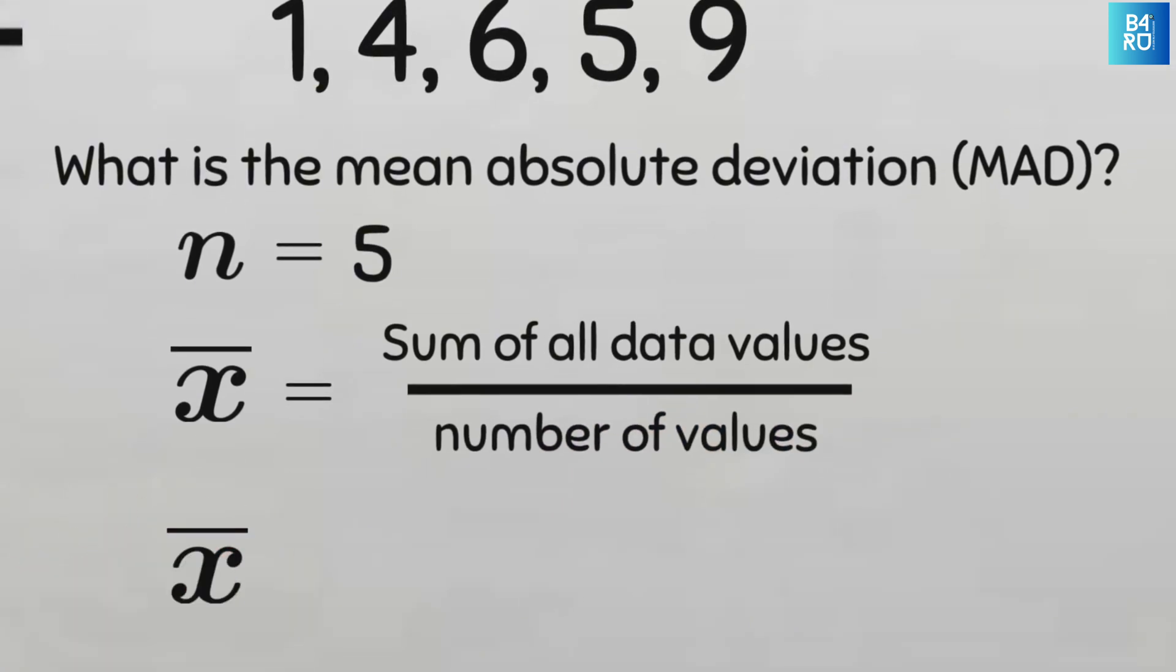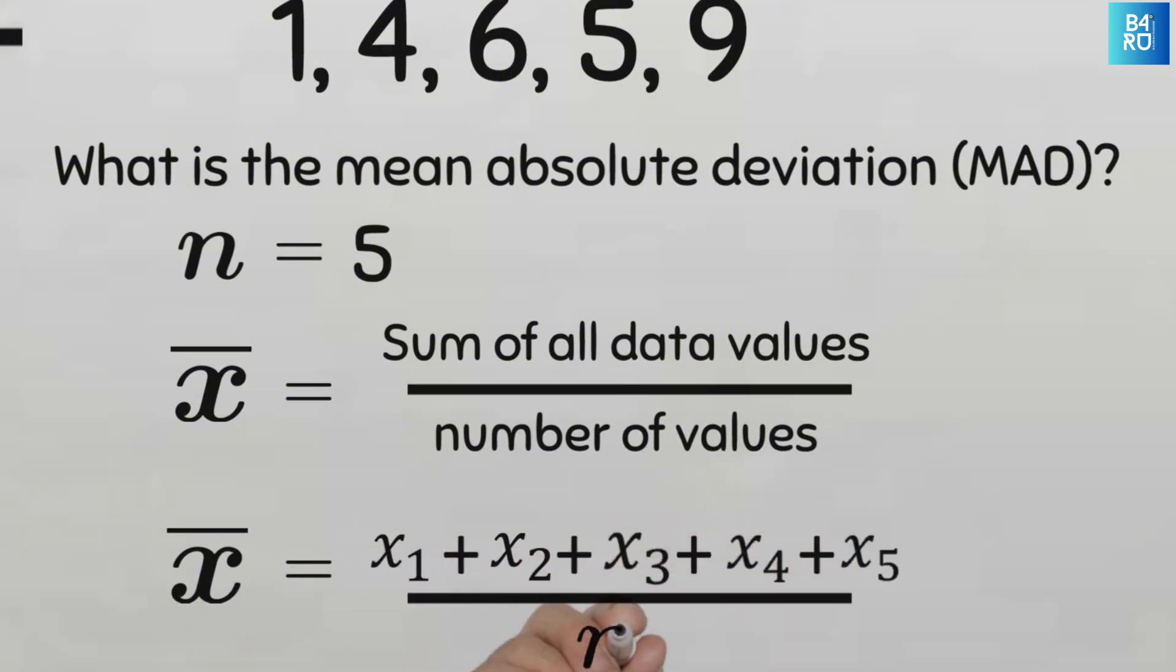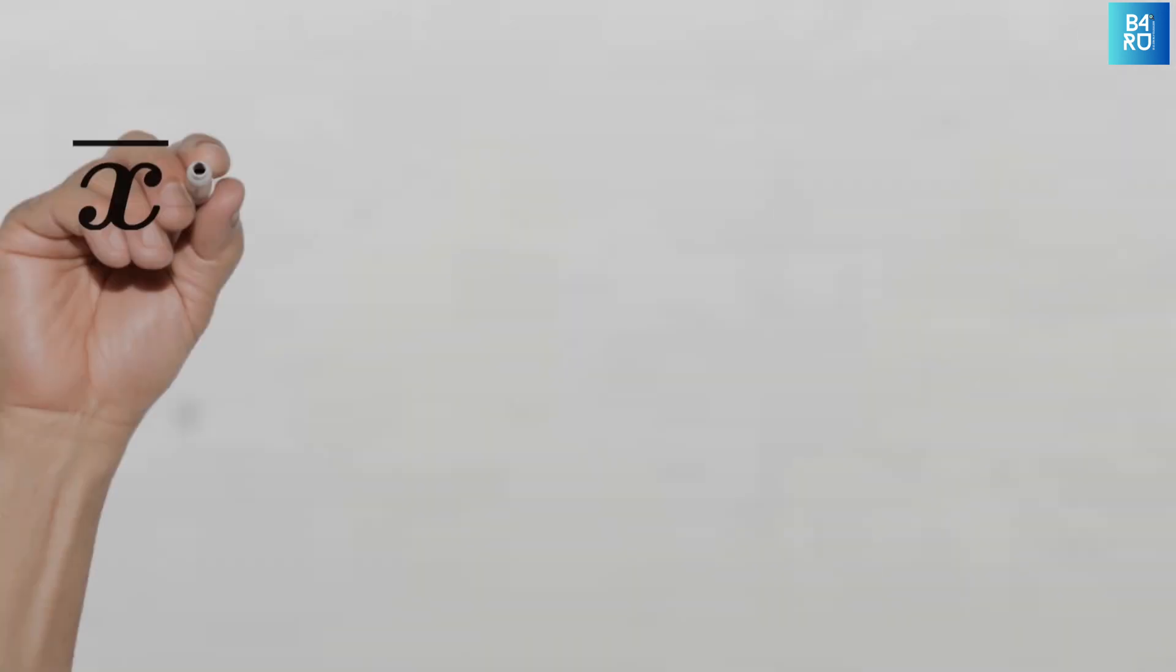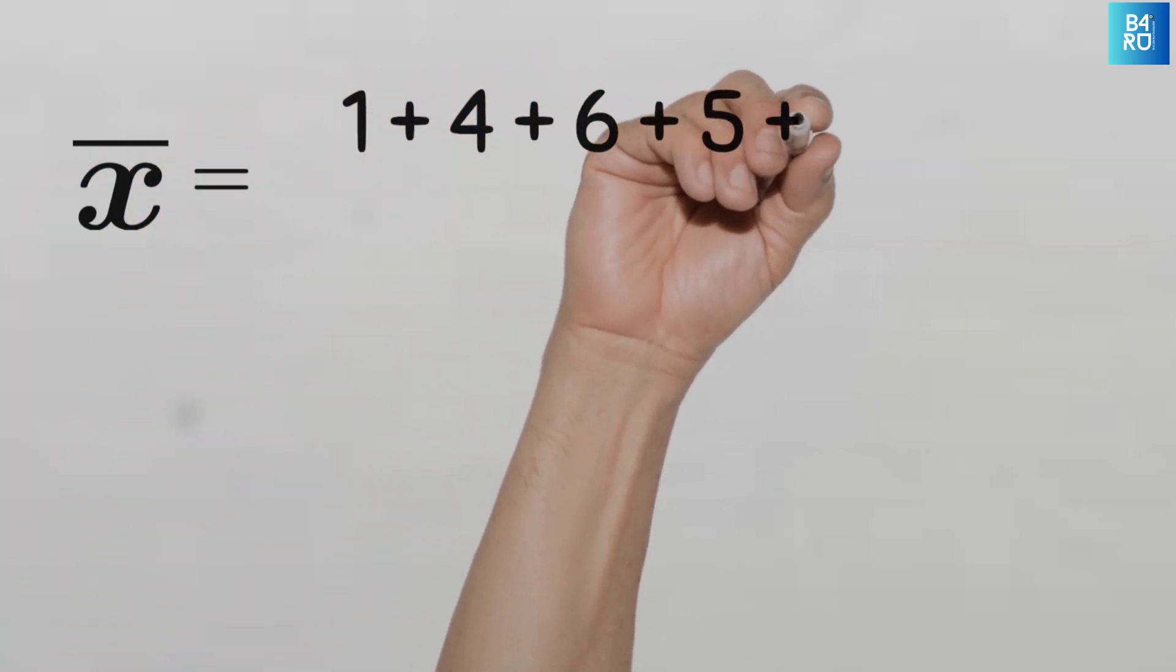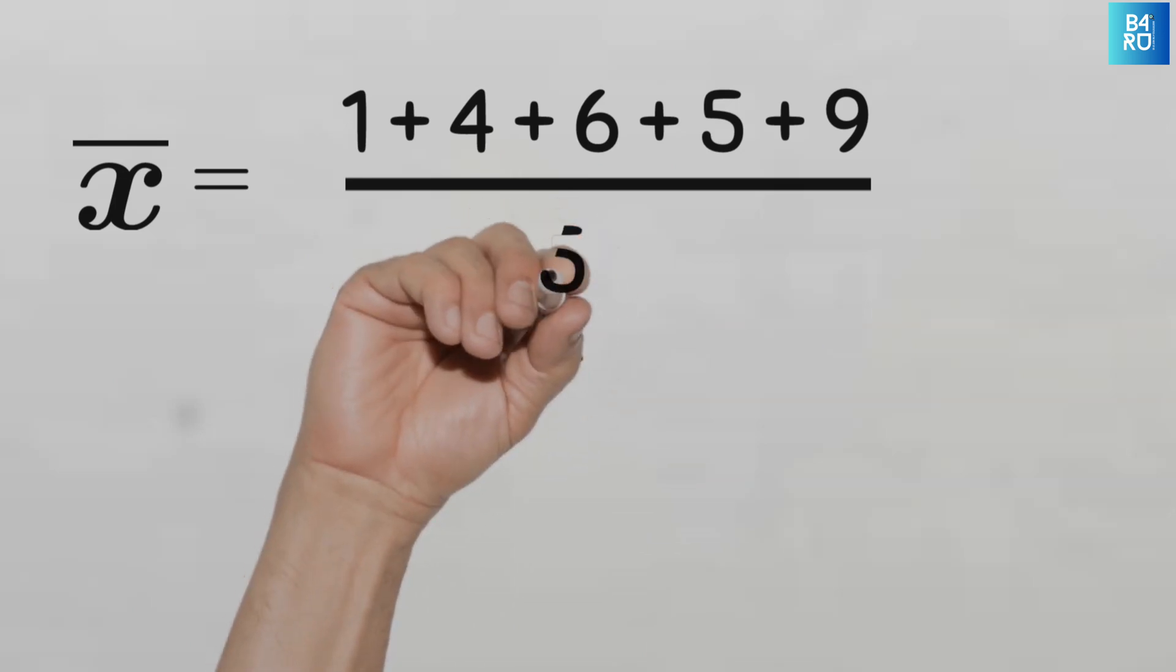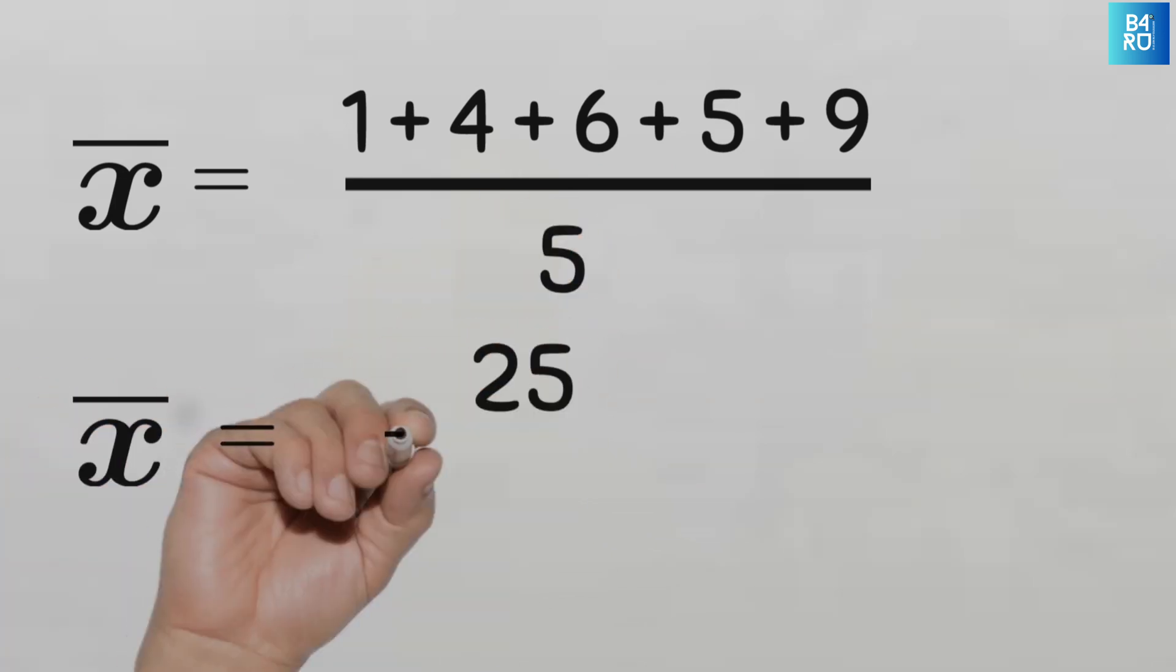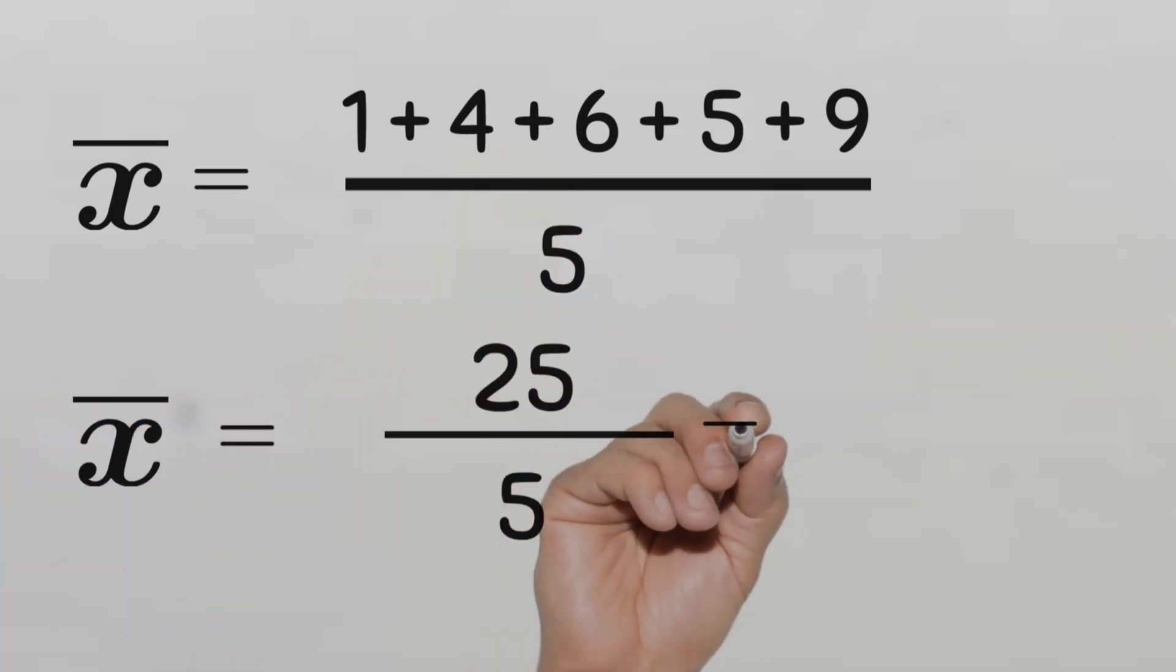So x bar will be equal to x1 plus x2 plus x3 plus x4 plus x5, all divided by n. So we'll have x bar is equal to 1 plus 4 plus 6 plus 5 plus 9, all divided by 5. And that is 25 divided by 5. That's a mean of 5 years.